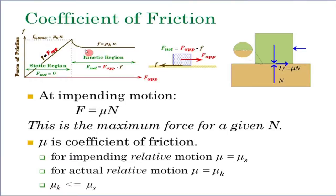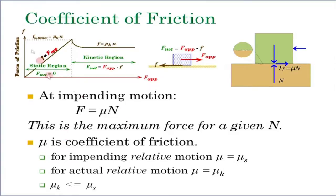For many surfaces, mu_s is typically greater than mu_k. When the block starts moving, the resistance actually decreases. When there is complete relative slippage between the top and bottom surface, the horizontal resisting force is given by mu_k times N, where mu_k is the coefficient of kinetic friction. So, for impending relative motion mu equals mu_s, and for actual relative motion mu equals mu_k. You can logically show that mu_k must be less than or equal to mu_s.